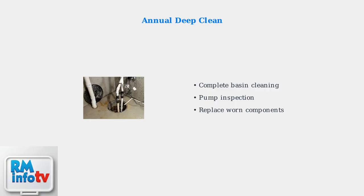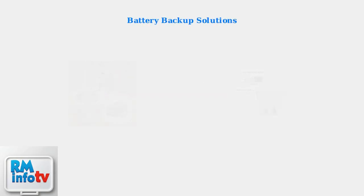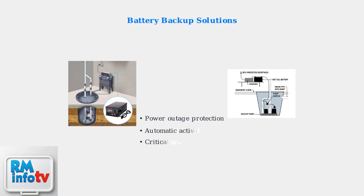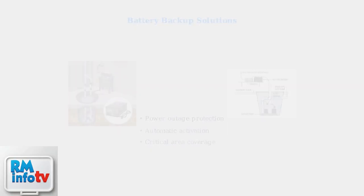Annual maintenance involves thorough basin cleaning: remove the pump, clean all surfaces, and inspect for wear or damage. This comprehensive service keeps your system running efficiently. For critical applications, battery backup systems ensure operation during power outages — these systems automatically activate when main power fails, providing essential protection.